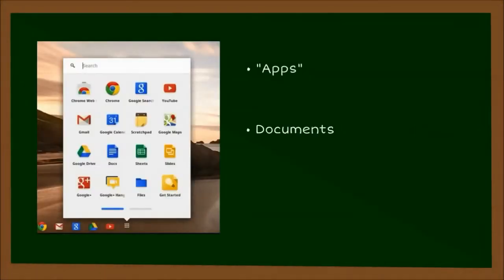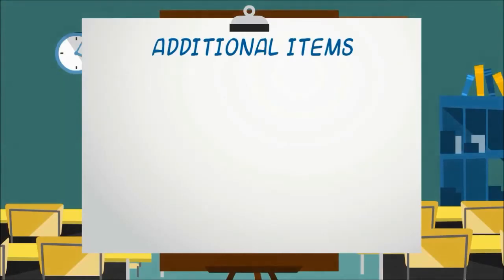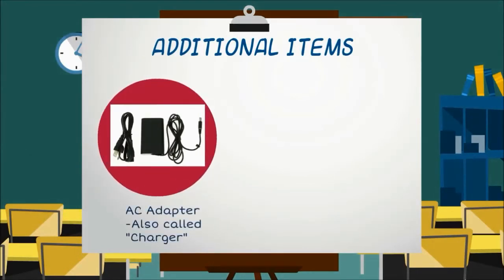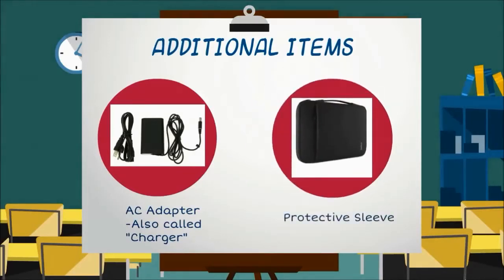Your apps and documents are all accessed and stored online. In addition to a Chromebook, you will be receiving and be responsible for one AC adapter, which is your charger, that you will use to charge your Chromebook, and one protective sleeve that you will use to store your Chromebook in when you are not using it.